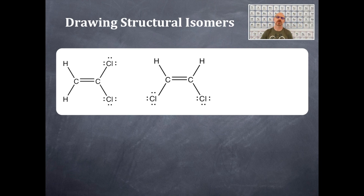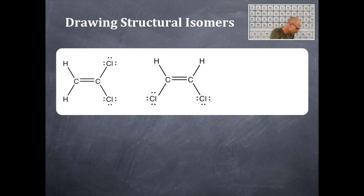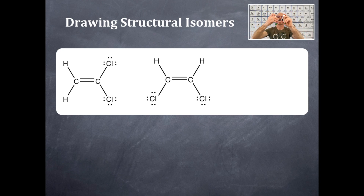Another structural isomer has the same formula but a different physical arrangement of atoms. We're actually plucking out atoms and placing them in new locations. This next one has the chlorines on the bottom and the hydrogens on the top, and just like the previous structure, it has a double bond which inhibits rotation — that is key to these structures.